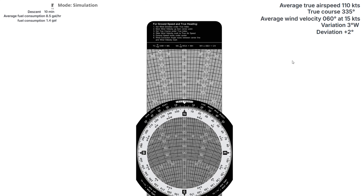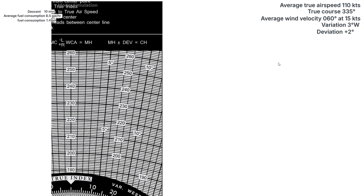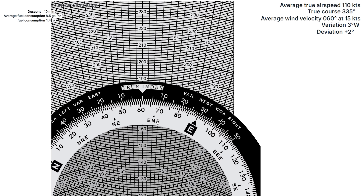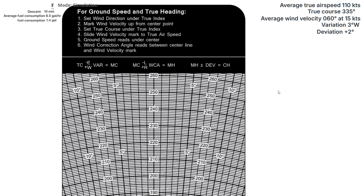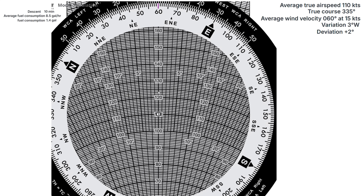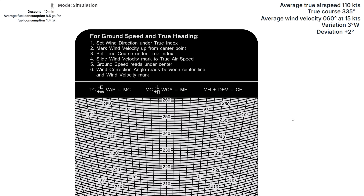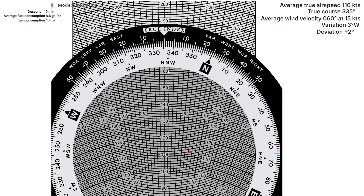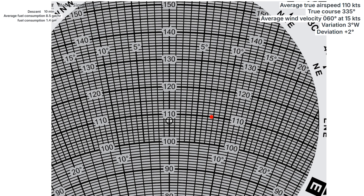We need to do a wind calculation using our E6B. First, set the wind direction under true index — spin 060 degrees under center. Then make a red mark up from the center point on our airspeed of 110 for 15 knots of wind speed. Spin the disk so our true course is under center — this moves that red mark. Next, slide the disk so the red mark sits on our true airspeed of 110. The red mark is 8 hash marks away from center, meaning our wind correction angle is 8 degrees right. We add that to our true course, then add the variation of 3 degrees west — east is least, west is best — then add the compass deviation of 2. All that adding gives us a compass heading of 348 degrees.